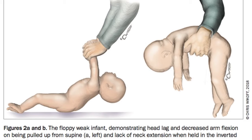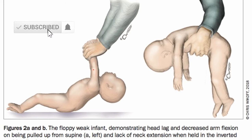Here is a demonstration of how to assess tone in an infant. This is a floppy infant — when the examiner lifts the infant, the head and neck fall back. When the child is held in ventral suspension, the head, arms, and legs all fall down, looking like an umbrella.